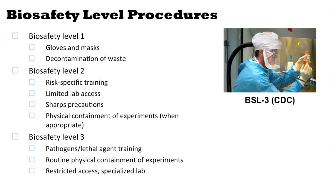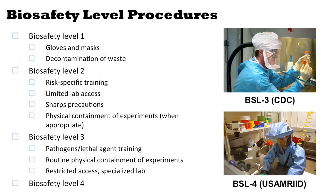Biosafety level 3 procedures include pathogenic lethal agent training, routine physical containment of experiments, and restricted access to a specialized lab. Biosafety level 4 procedures include restricted access to a much more highly specialized lab and extensive further training. There are relatively few labs that are rated to work at biosafety level 4.